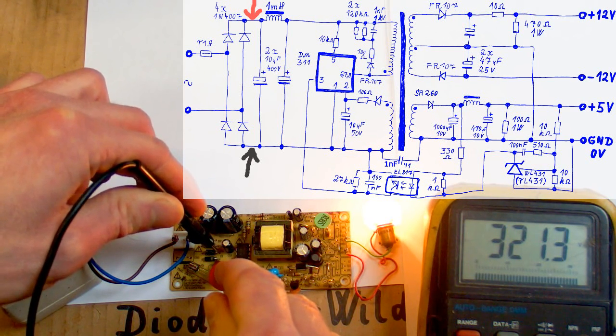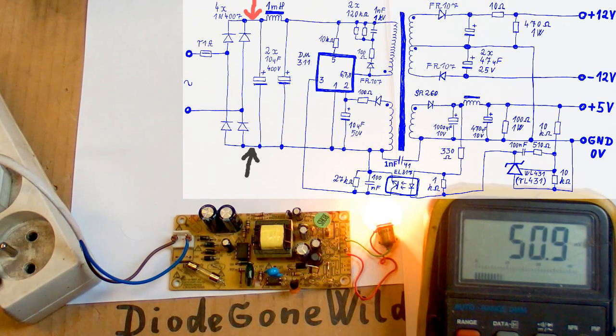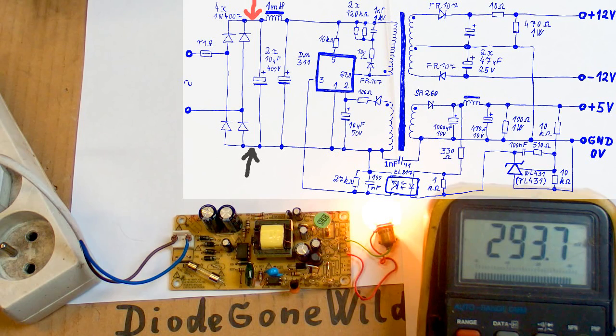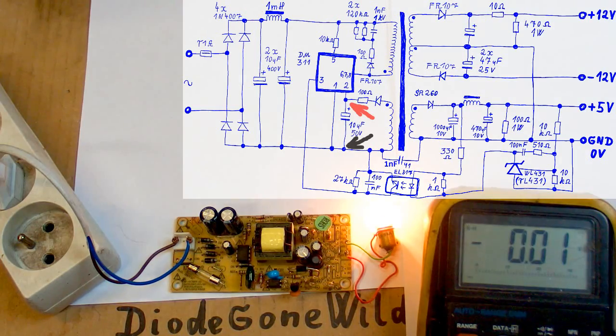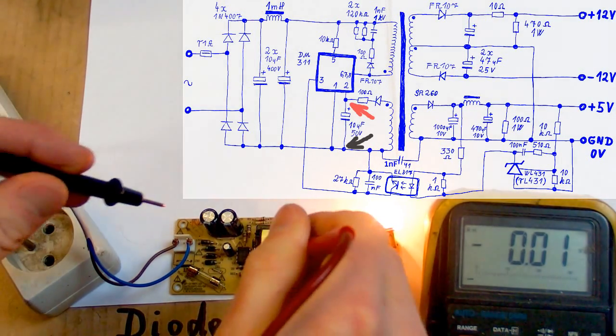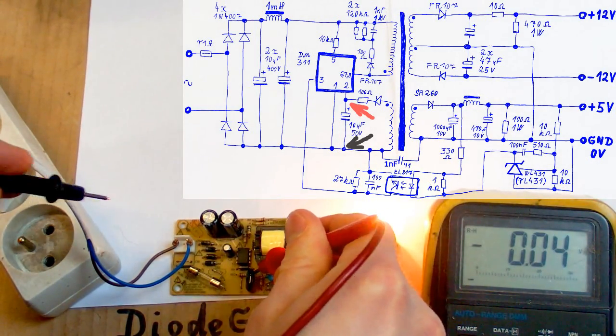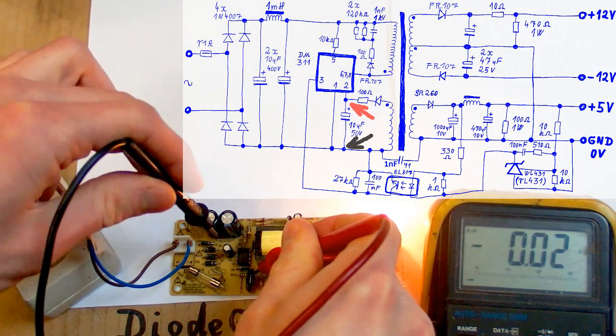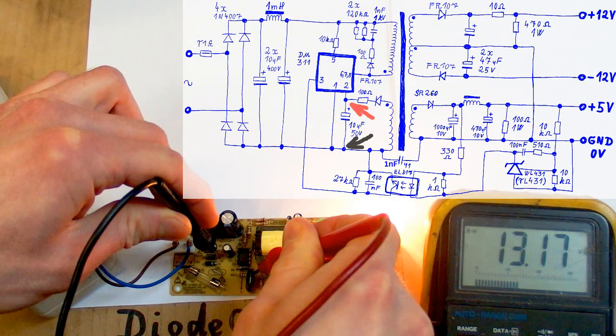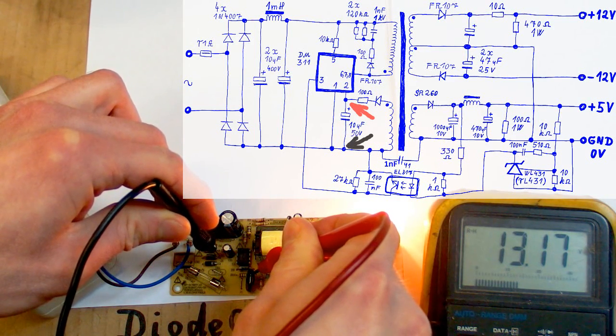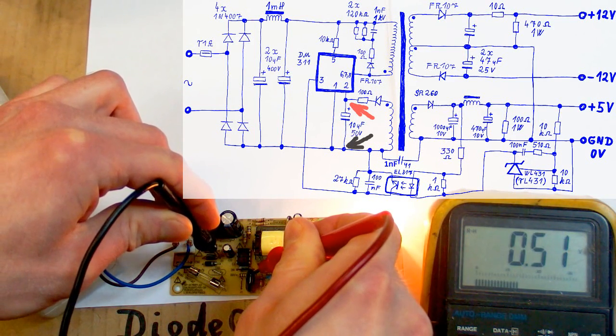And this is about square root of 2 times the mains voltage or 1.414 times the AC voltage. So the rectification actually increases the voltage. Now let's try to measure the operating voltage of the chip, which should be a low voltage, I guess something from 10 to 20 volts. And it is about 13 volts, so it seems okay.